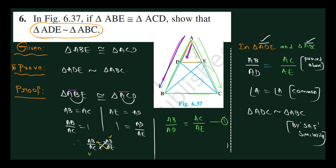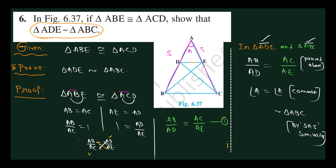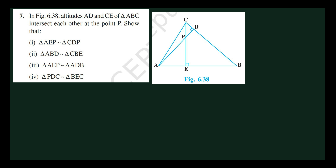Angle A equals angle A — common. Therefore triangle ADE is similar to triangle ABC. By SAS similarity — side, angle, side — the angle is included between the two sides. This is SAS similarity.